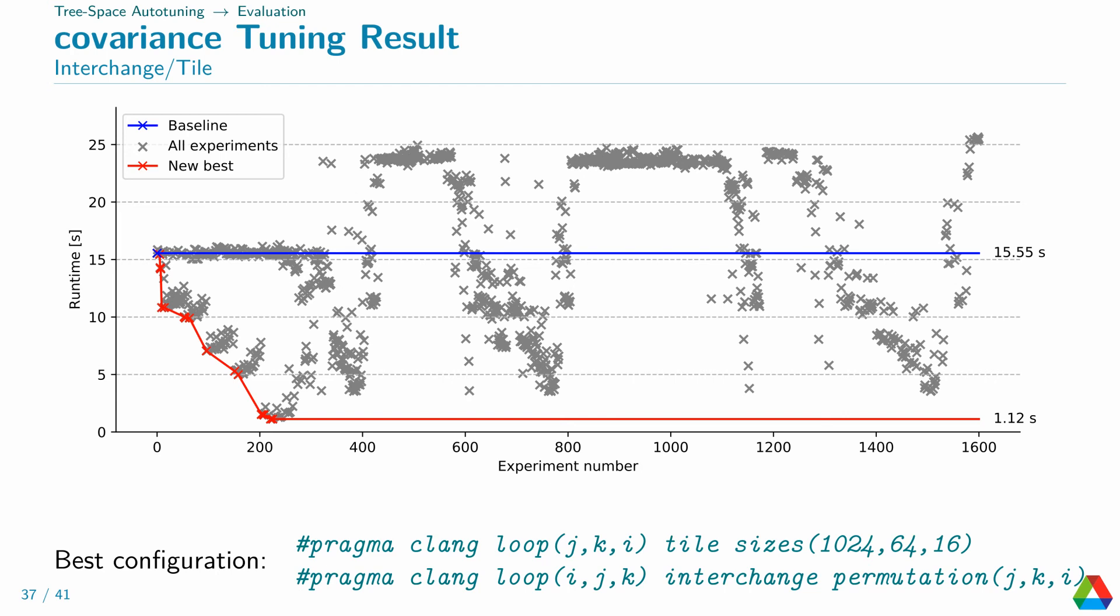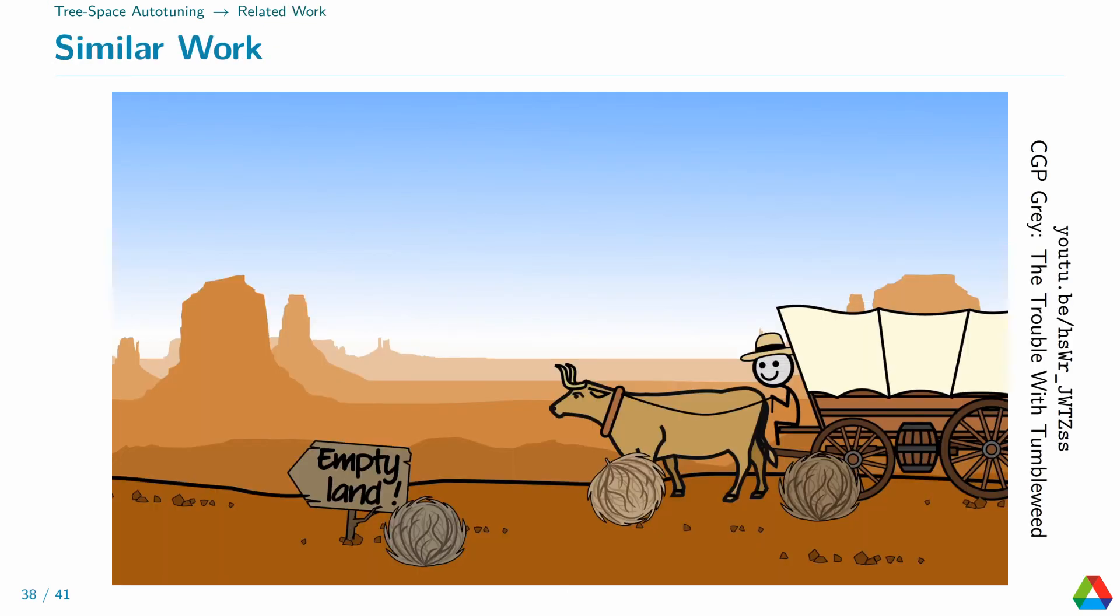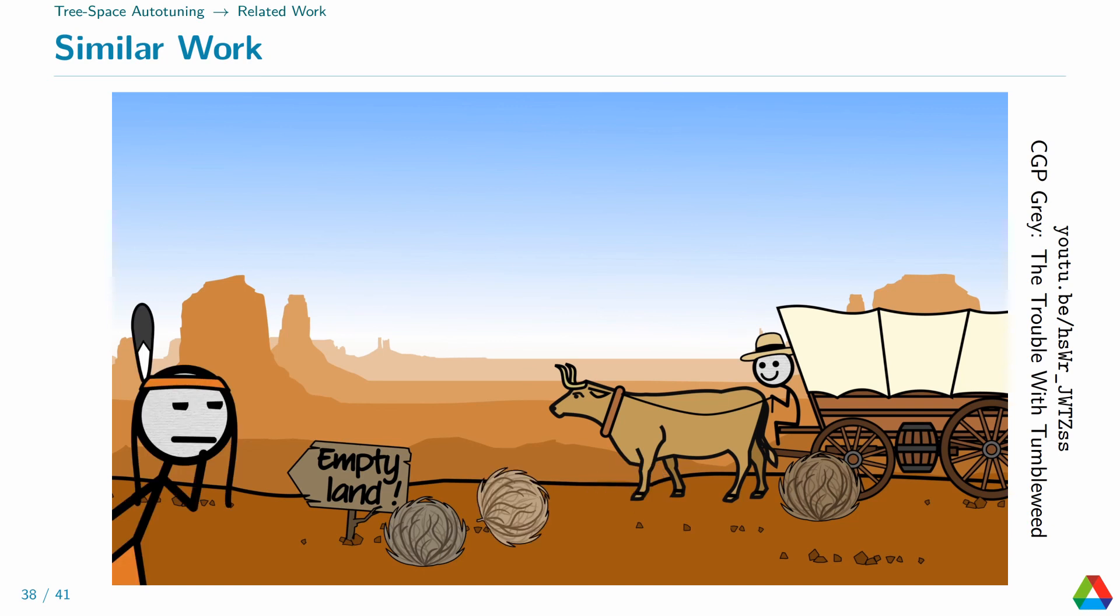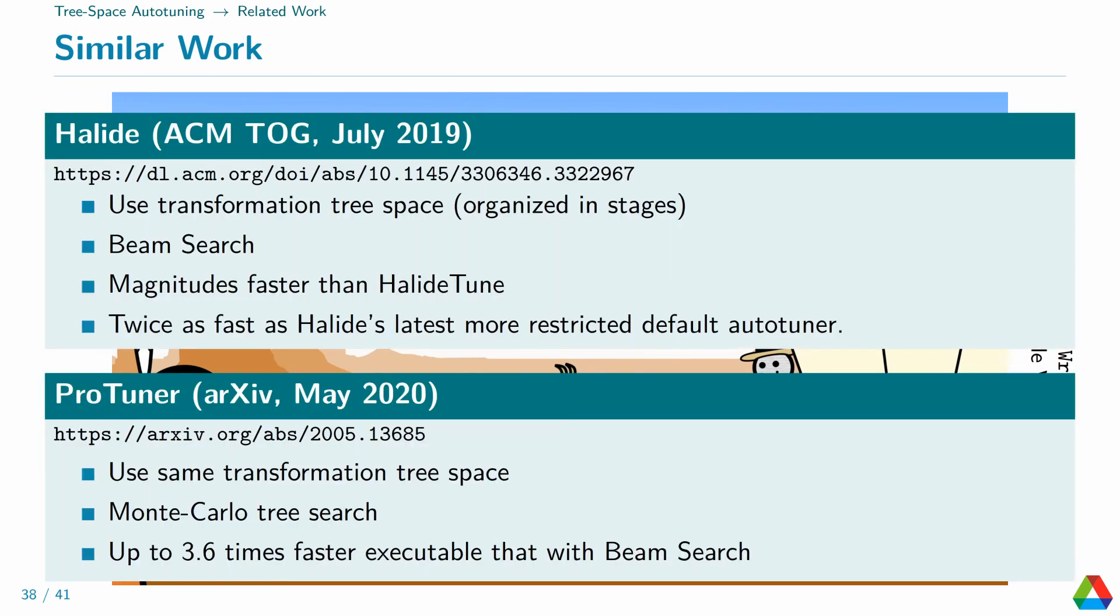MCTS is an obvious choice for search over trees. It is used for instance for chess AIs. At this slide, I wanted to claim that we are the first applying MCTS to loop autotuning, or maybe even using a tree-shaped search space. To be sure, just before the deadline of the camera-ready version of this submission, I googled autotuning Monte Carlo tree search again, like I did when I was originally looking for solutions to this problem and for related research. Well, turns out I am not the first. Maybe unsurprisingly, someone else published this idea before me. There is an unpublished paper introducing ProTuner, which applies MCTS to Halide.